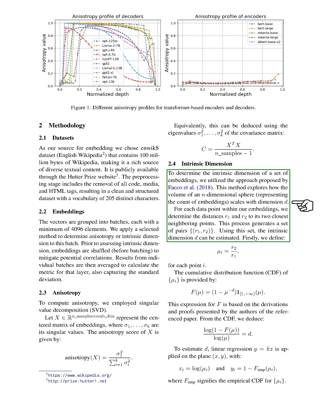To determine the intrinsic dimension of a set of embeddings, we used a method that explores how the volume of an n-dimensional sphere scales with dimension d. For each data point within our embeddings, we determine the distances to its two closest neighboring points. This process generates a set of pairs. Using this set, the intrinsic dimension d can be estimated — we define a ratio for each point, and the cumulative distribution function (CDF) of these ratios is provided by a certain formula. From the CDF, we can deduce the intrinsic dimension. To estimate it, linear regression is applied on the plane, with the logarithm of the ratio and the empirical CDF for the ratios as the variables.